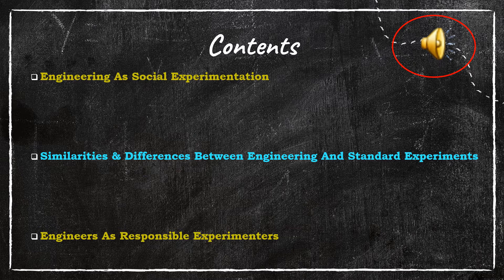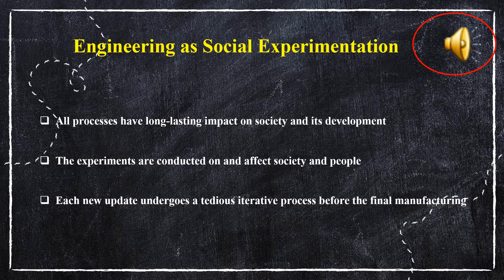In this presentation we will be covering three important topics: engineering as social experimentation, the similarities and differences between engineering and standard experiments, and engineers as responsible experimenters. The processes involved in engineering have a long lasting impact on society and its development. Apart from technological advancements, all engineering experiments affect society and societal beings. The processes involved in engineering are not solely restricted to laboratories or computers in simulated or controlled conditions — these experiments affect and are conducted on a social scale as well.